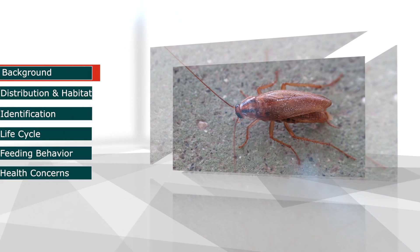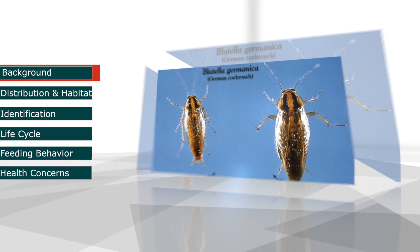Despite its name, the German cockroach actually originated from Southeast China. Of the 45 species in the Botella genus, the German cockroach is the most common.